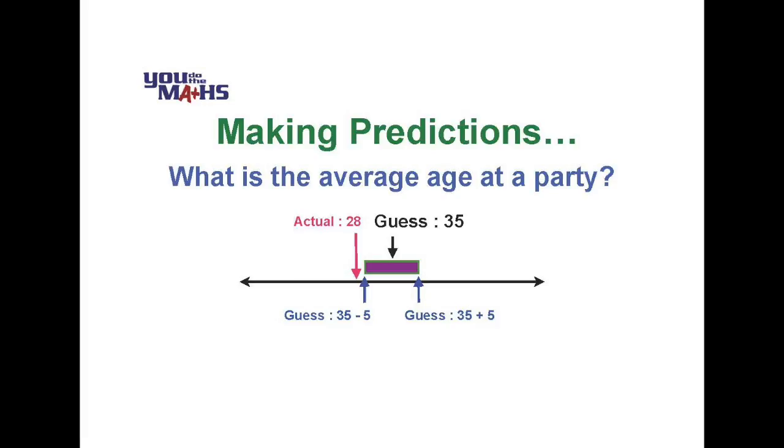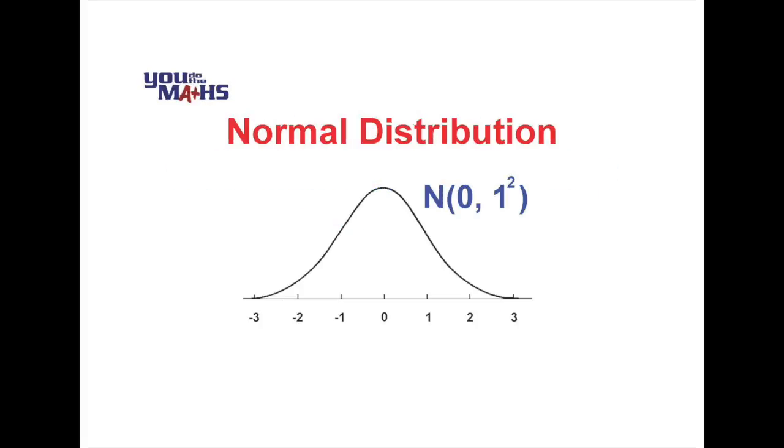If you studied normal distributions you'll know that most things that occur in nature such as measurements to do with people's heights and weights are normally distributed. So let's look at how confidence intervals might work and examine the standard normal distribution with a mean of 0 and a standard deviation of 1.